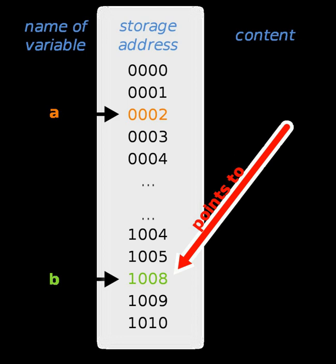A based pointer is a pointer whose value is an offset from the value of another pointer. This can be used to store and load blocks of data, assigning the address of the beginning of the block to the base pointer.